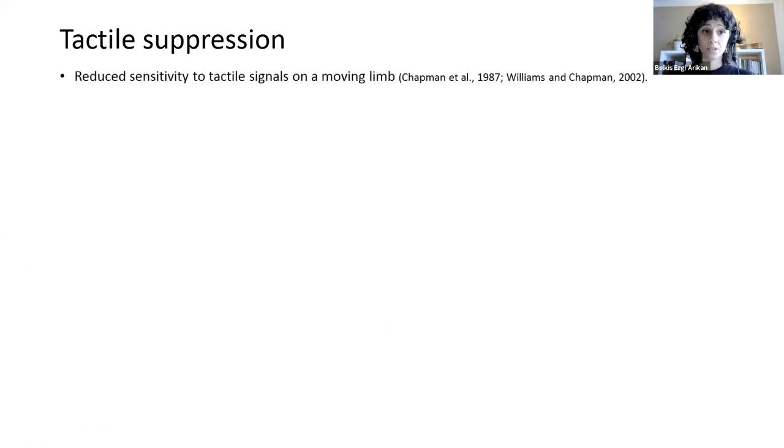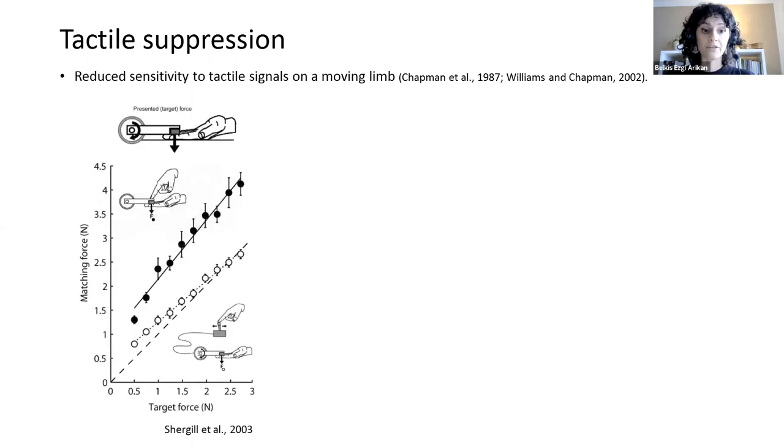So tactile suppression is the phenomenon that our sensitivity to tactile signals on a moving limb is reduced. It can be observed, for example, for self-produced tactile sensation.